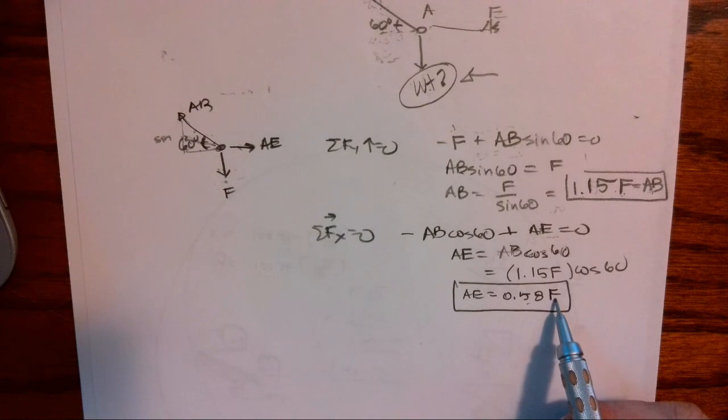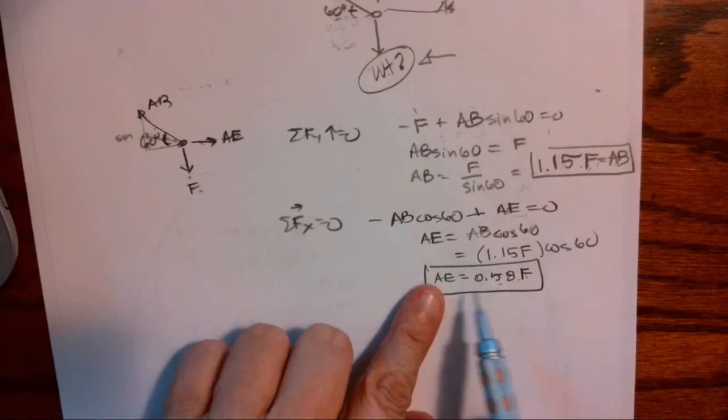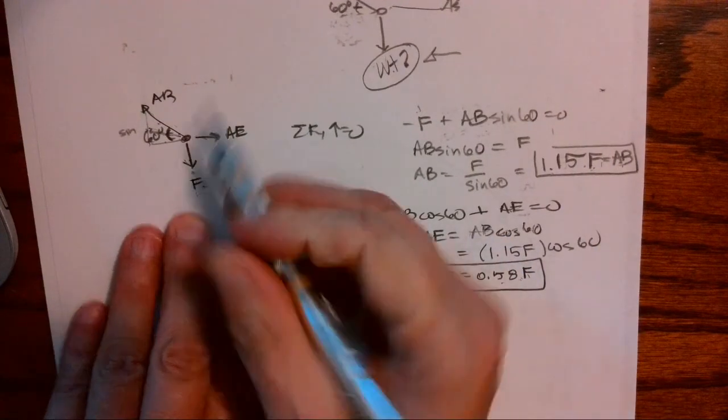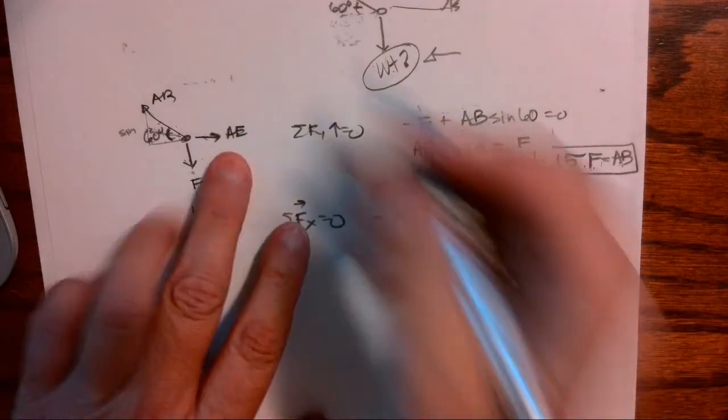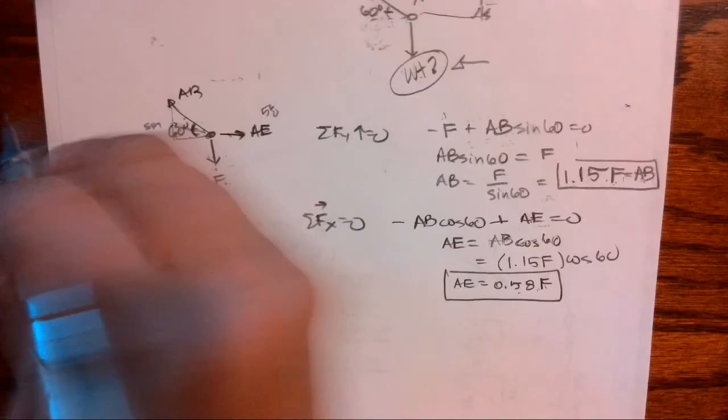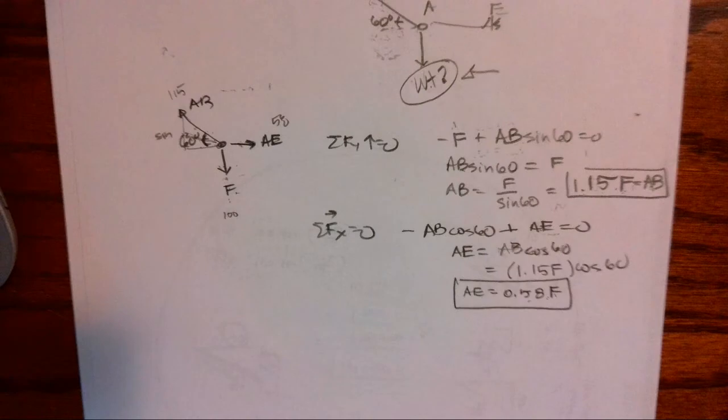Okay, so this is carrying less than half, or well just over half of what that applied force is. So if I were looking at these two cables, if this were carrying, if this were 100 pounds, okay if this were 100 pounds, then AE would be carrying about 58 pounds and AB would be carrying 115.